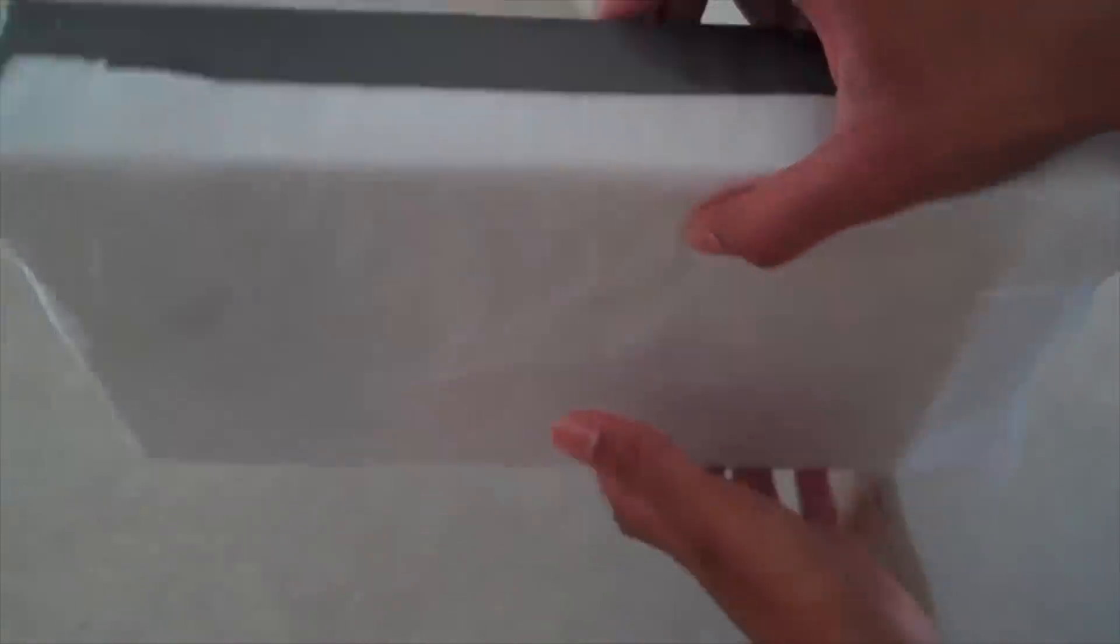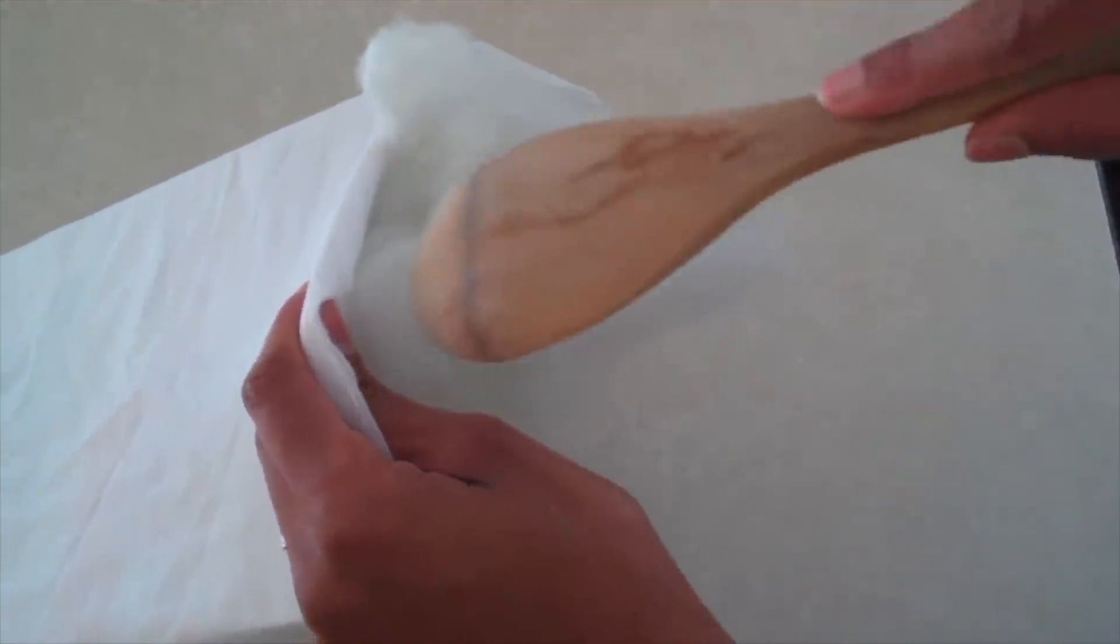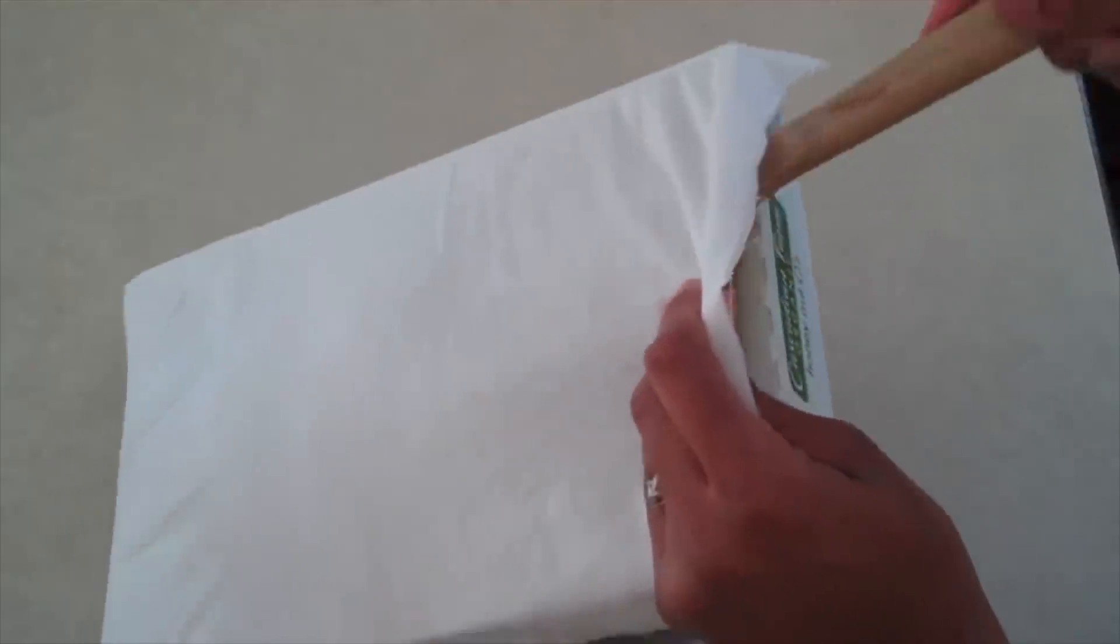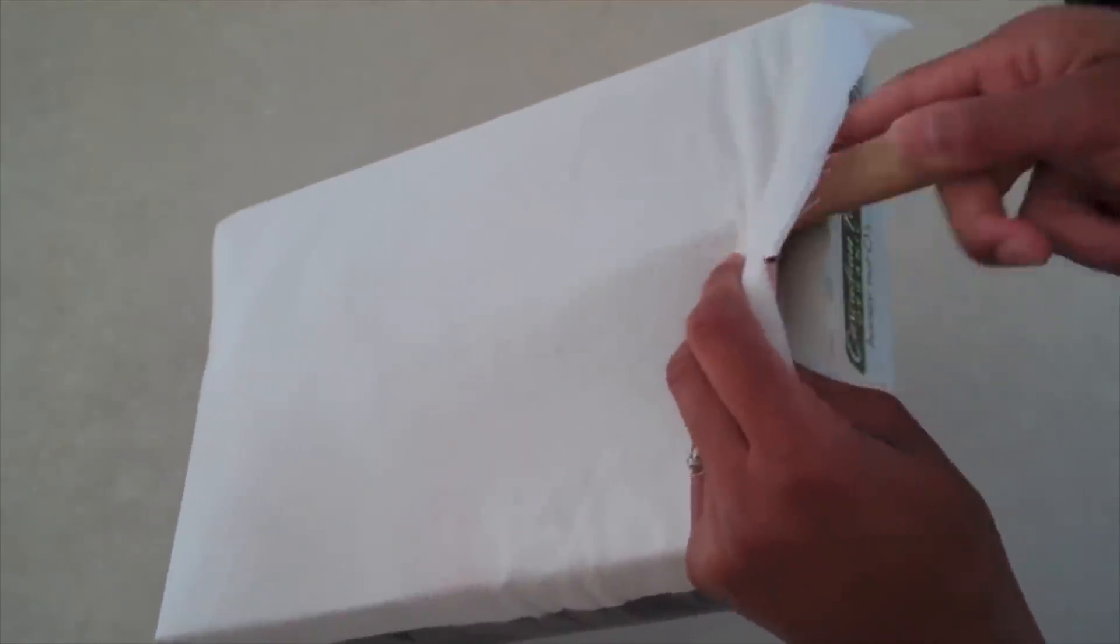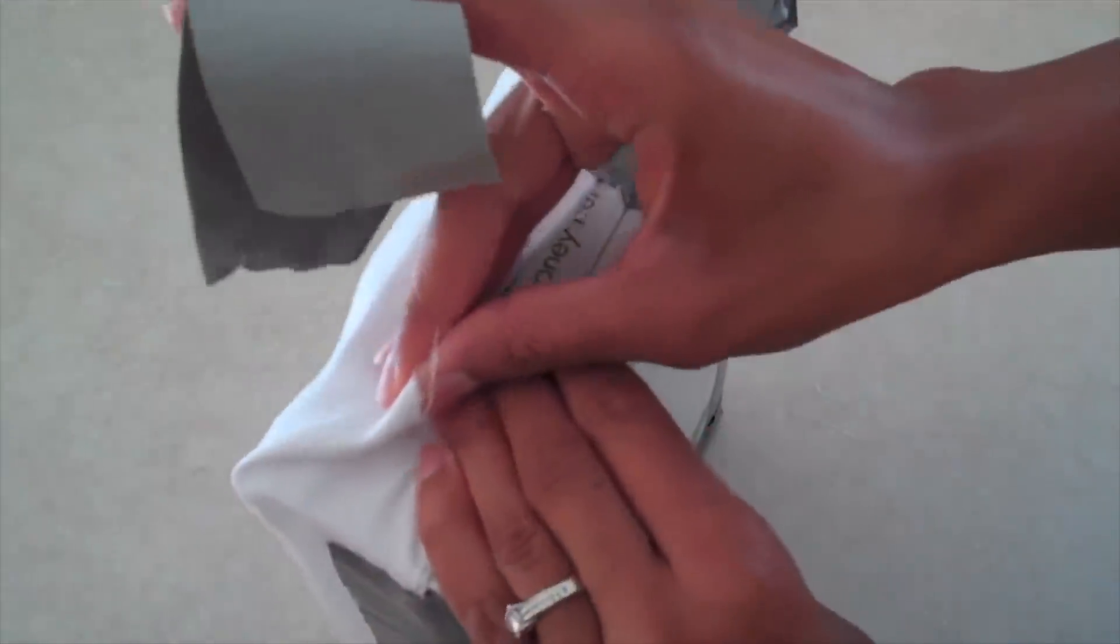After you've gone around three sides of the box, stuff the last side with a little bit of pillow fluff. And I'm going to use a spoon to get it all the way to the back. Once you have it nice and fluffed, just go ahead and tape up that last open side.